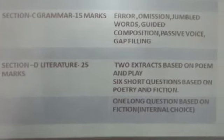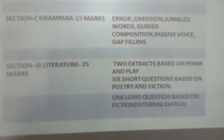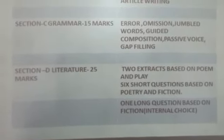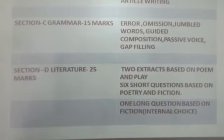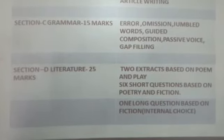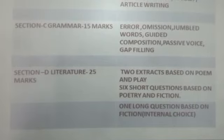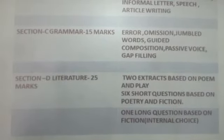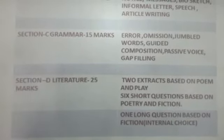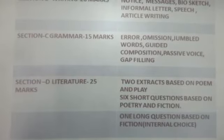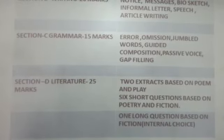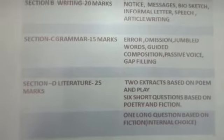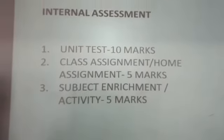Section D is literature. The first question is an extract based on poetry, that is of 4 marks. Extract based on prose or play, followed by questions that are of 4 marks. There are 6 short answer questions of 12 marks in total.